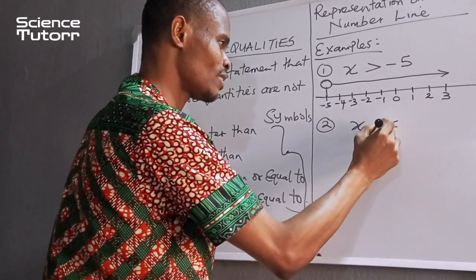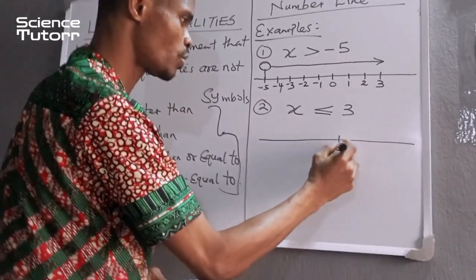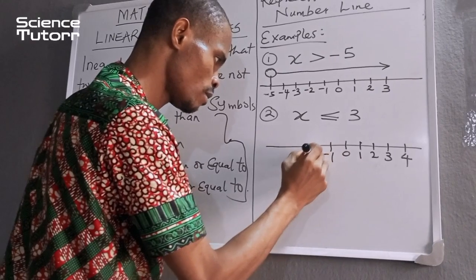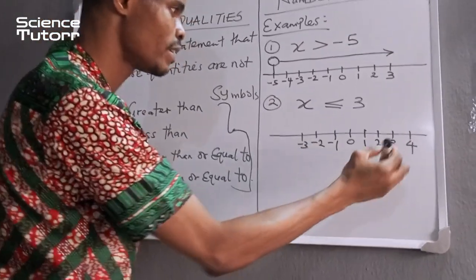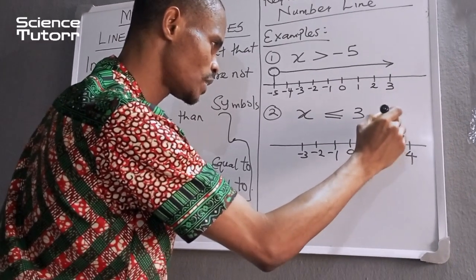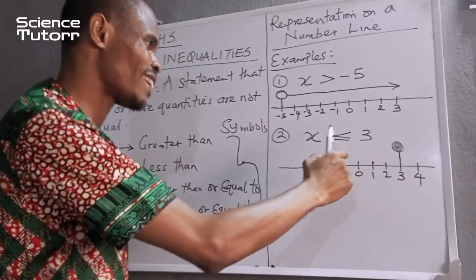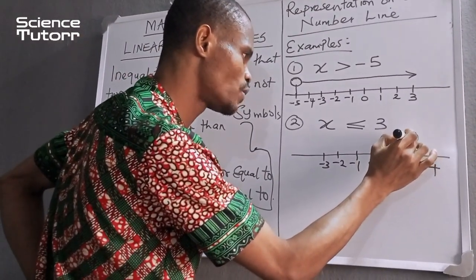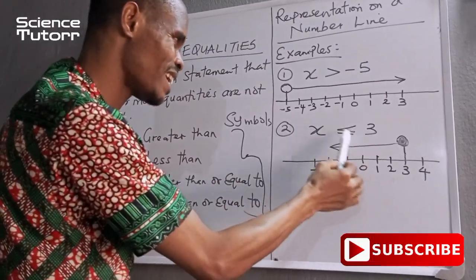Now let's take another one — number 2: x is less than or equal to 3. Let's draw a number line for this. We have our midpoint 0; moving to the right: 1, 2, 3, 4; moving to the left: minus 1, minus 2, minus 3. Now x is less than or equal to 3. At number 3, I am going to draw a dotted line. You can see it is different from the first instance — I'm using a dotted line. It is less than or equal to 3, so numbers on the left hand side will all be less than or equal to 3, and my arrow moves to the left hand side.